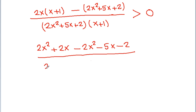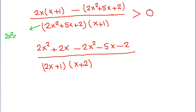So the denominator factors as 2x² + 4x + x + 2, and taking 2x common from the first pair gives (x + 2), yielding the factorization (2x + 1)(x + 2).